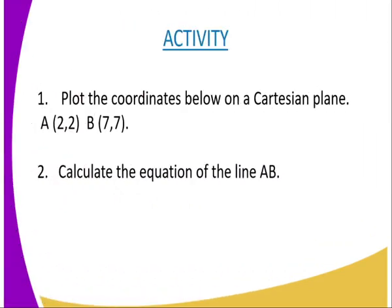On to the activities of today. We have come to the end of today's lesson, and I'm going to mark the end by giving you the following assignment. First question: plot the coordinates on a Cartesian plane, coordinate A(2, 2) and coordinate B(7, 7). Second question: calculate the equation of line AB.